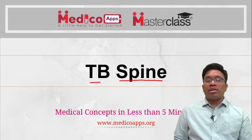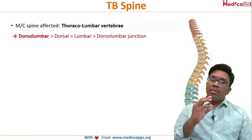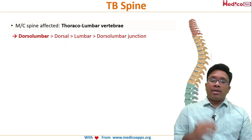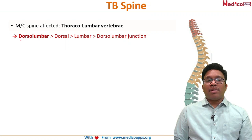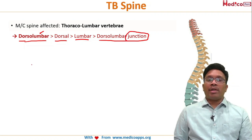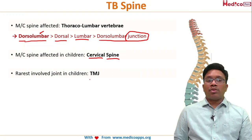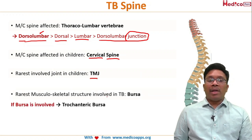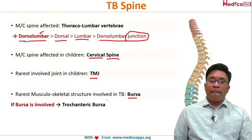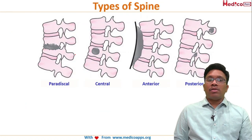Moving on to tuberculosis of the spine: the most commonly involved region is the dorsal and lumbar region. In exams, if dorso-lumbar is an option, go for it, followed by dorsal, then lumbar, then the dorso-lumbar junction — which involves fewer vertebrae. The most common spine affected in children is the cervical spine. The rarest joint in children is the temporomandibular joint, and the rarest musculoskeletal structure involved is the bursa — specifically the trochanteric bursa.